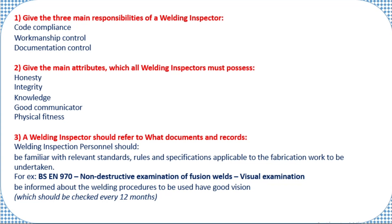The first responsibility is code compliance, the second is workmanship control, and the third is documentation control. For code compliance, when a welding inspector goes to site, he should check the WPS — which code they are following, whether it is AWS D1.1 or ASME Section 9. Every code has different requirements, so the WPS should comply with the applicable code. Workmanship control means checking that the welder doing the welding has a valid ID card, confirming he has already demonstrated his welding competence.